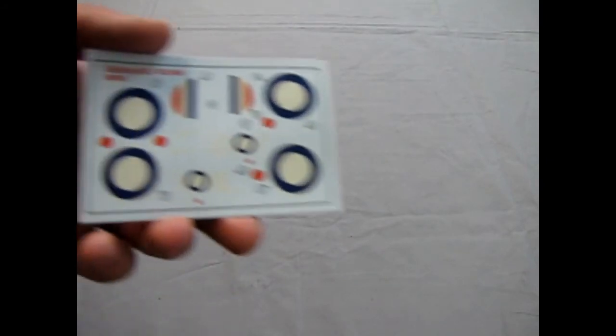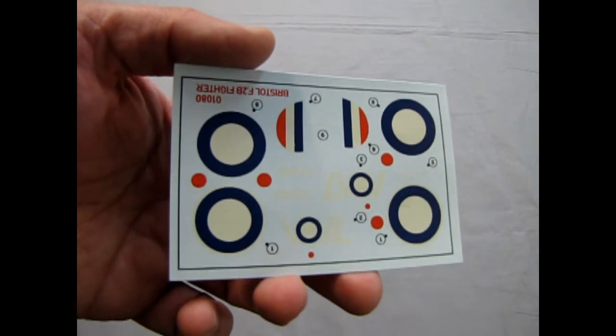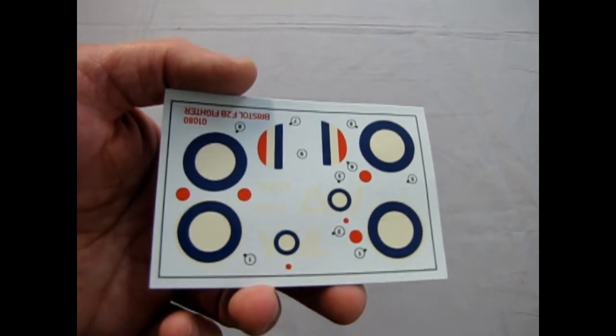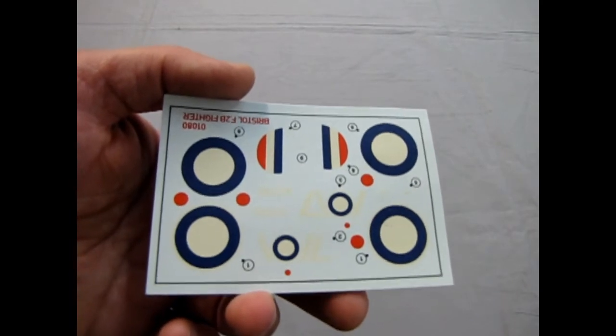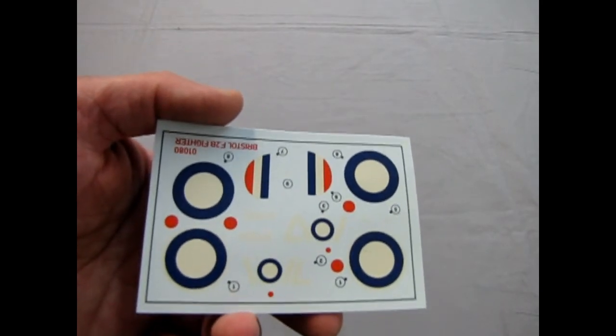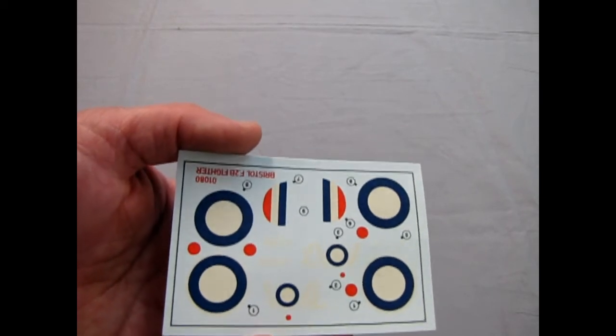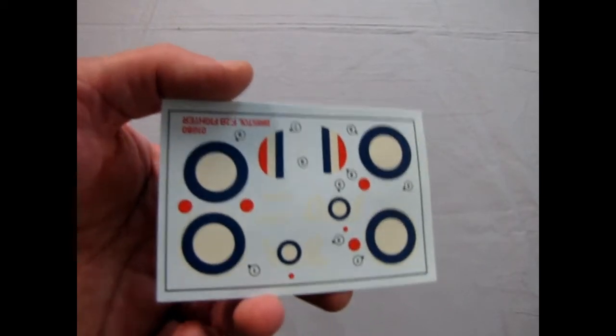Okay and then these are the decals. And I'm not quite sure why they put the red dots off of the roundel, which of course makes it pretty hard to locate the center dots. But with a bit of luck you can get it anchored pretty good.